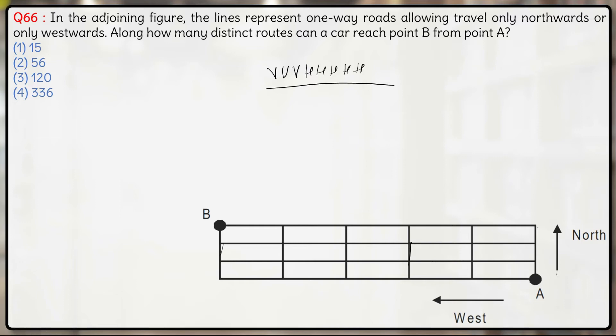So number of ways of arranging them will be how many objects are there? One, two, three, four, five, six, seven, eight objects are there. Eight factorial.